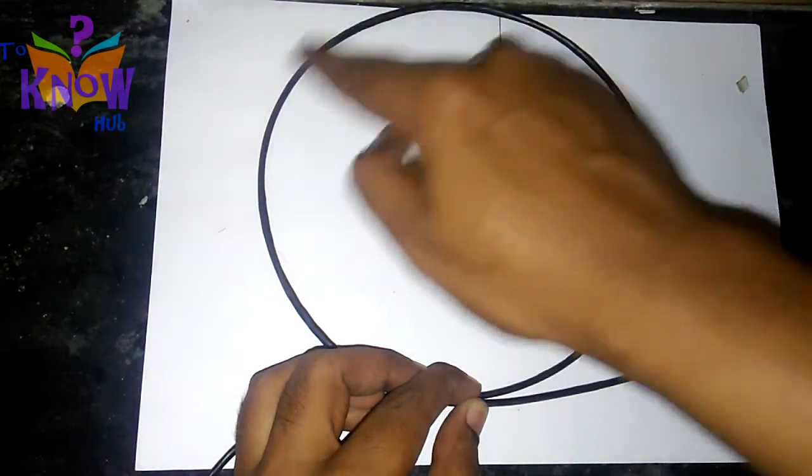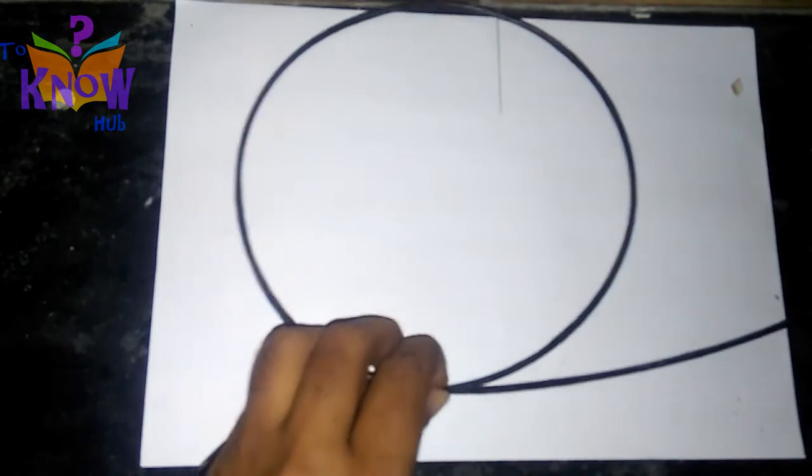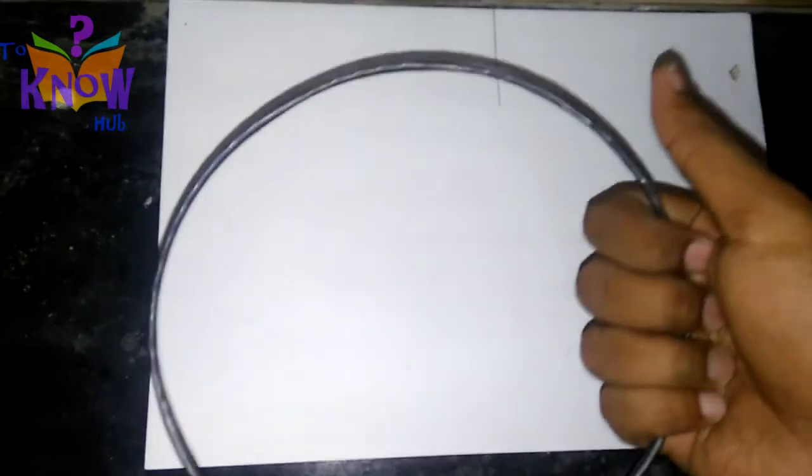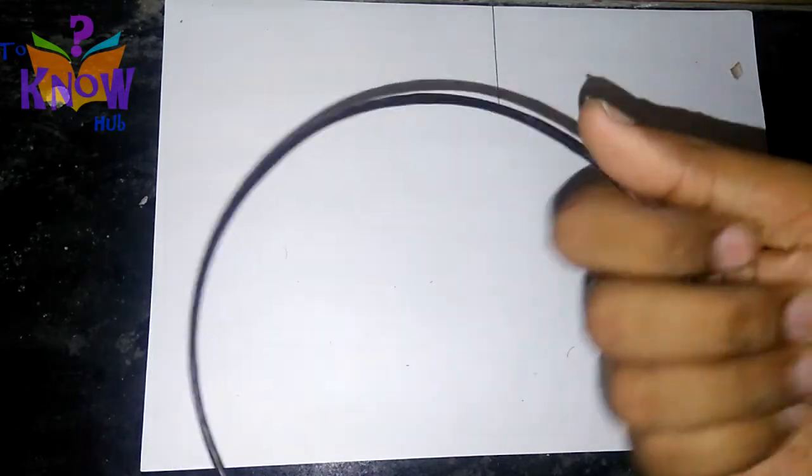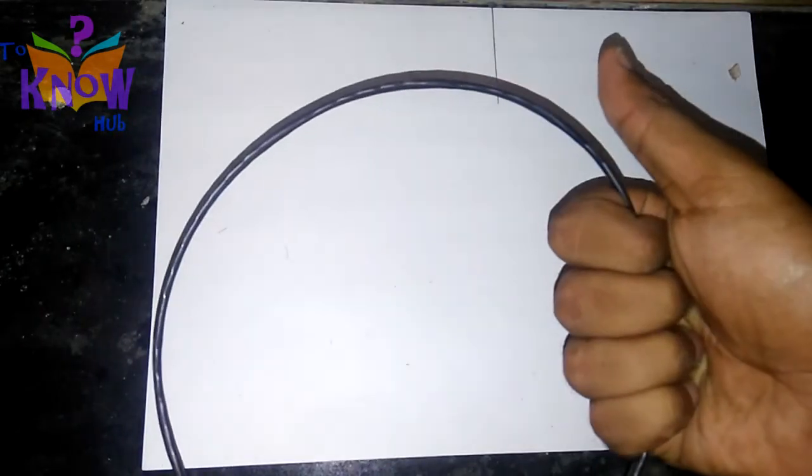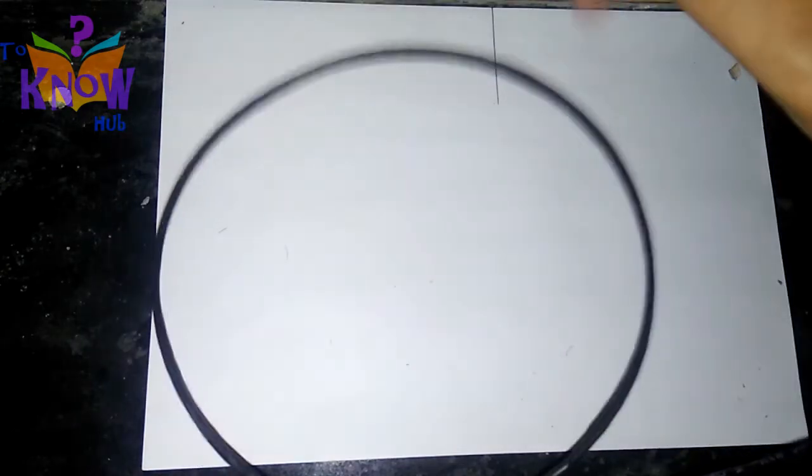Now, this is a loop made of a conductor. A small part of this loop would be a straight line. At this point, we apply the right-hand thumb rule. Direction of the current is this. So, thumb is pointing towards the direction of current. So, magnetic field is in this direction.